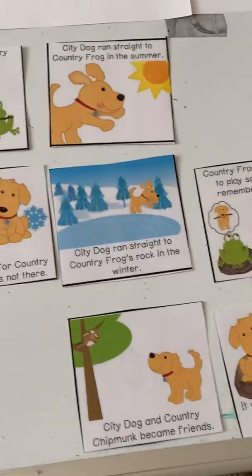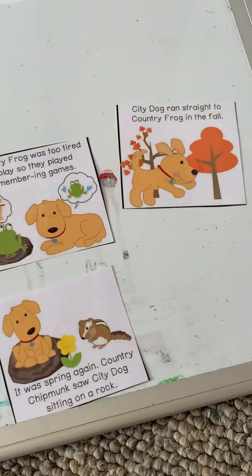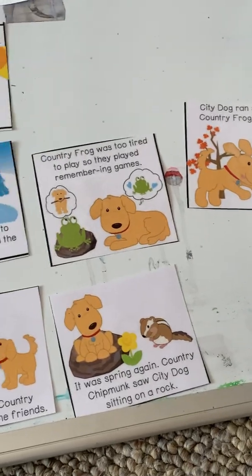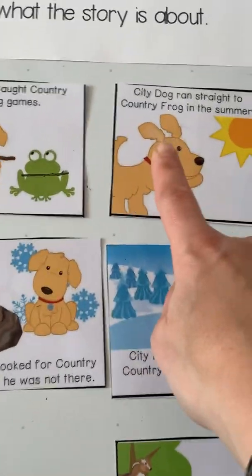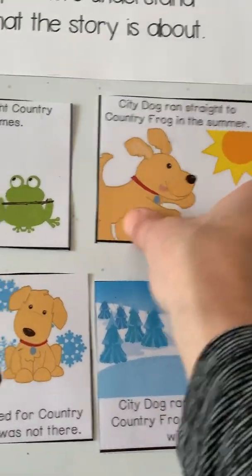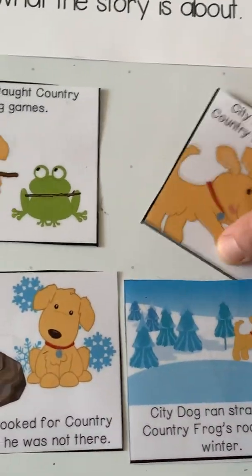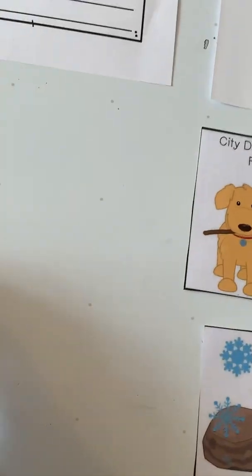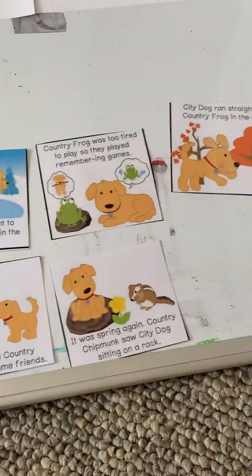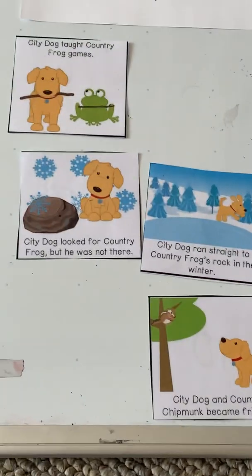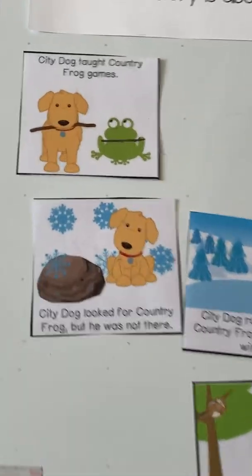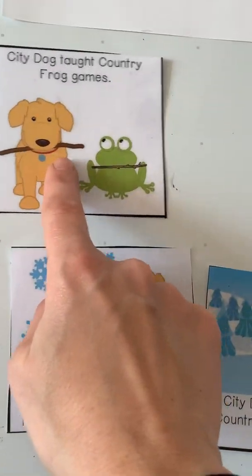What happened after that? What happens after spring? City Dog ran straight to Country Frog in the summer. That's the summer. Then what happened? They taught frog games — City Dog taught Country Frog games.